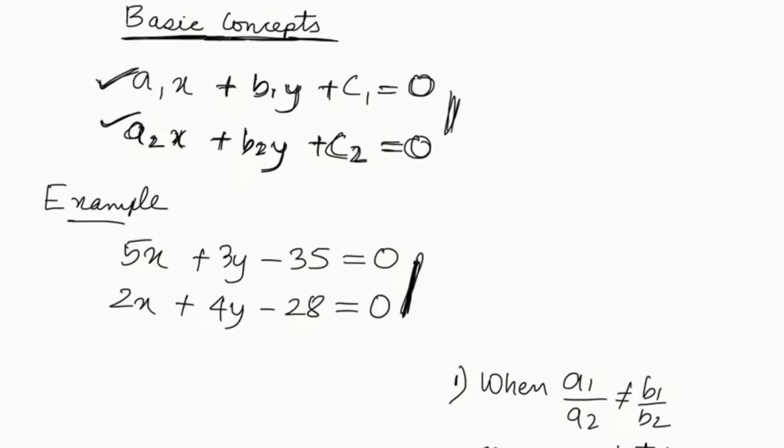Now if we compare the general form with these two equations we have considered as examples, we will get a1 is 5. What about b1? b1 is 3. What about c1? c1 is minus 35, but we have to take care of the minus sign here.